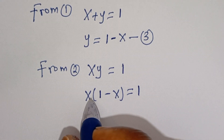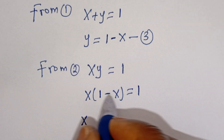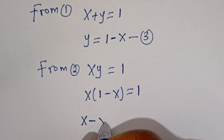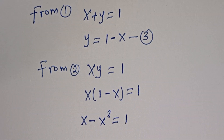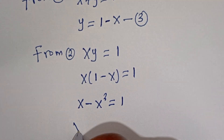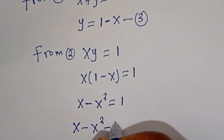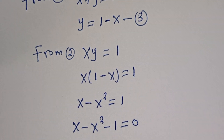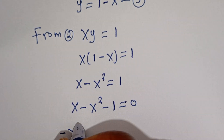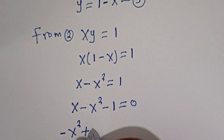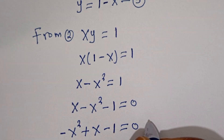Let's open the bracket: x times 1, that is x, then x times minus x, we have minus x squared, is equal to 1. Then here is x minus x squared minus 1 is equal to 0. Let's rearrange this: we have minus x squared plus x minus 1 is equal to 0.